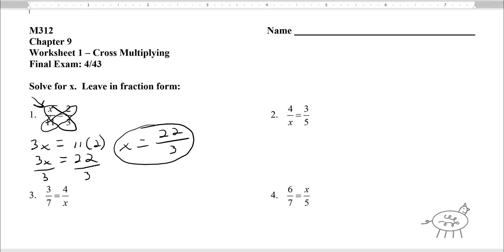So again, I'm going to cross multiply number 2 here. So I'm going to get 3 times x is 3x. 4 times 5 is 20. And then you divide both sides by 3 to solve for x. So x is 20 thirds.